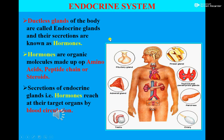Exocrine glands are also known as duct-bearing glands. These glands possess ducts and their secretion reaches the site of action through their duct. For example, secretion of the liver, i.e. bile, reaches the duodenum through the bile duct. Pancreatic secretion reaches the duodenum through the pancreatic duct. Mammary glands possess lactating ducts and their secretions reach the nipples through these lactating ducts.